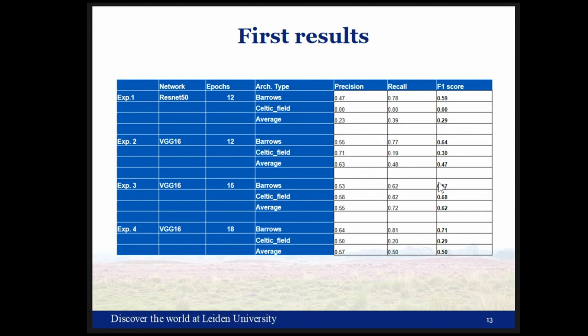The results show that Faster RCNN can be used as a multi-class object detector for archaeological objects within LiDAR data. The best F1 scores from the first experiments are around 0.6 to 0.7. The F1 score is a measure of model accuracy — the harmonic mean of precision and recall — where 0 is worst and 1 is best.